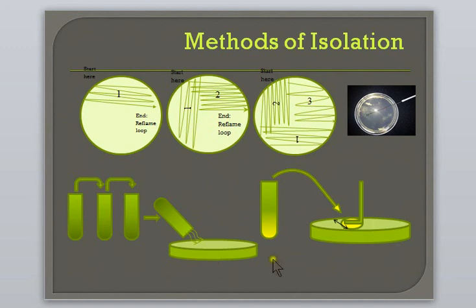In the spread plate method, a known amount of broth containing the specimen is distributed across an agar plate using a spreader. This dilutes the specimen across the surface of the plate.